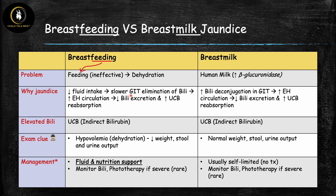With less fluid intake, there is less fluid in the GI tract, leading to slower elimination of bilirubin. Bilirubin then hangs around long enough to become deconjugated, enters enterohepatic circulation, and more unconjugated bilirubin gets reabsorbed — resulting in elevated indirect (unconjugated) bilirubin. On test questions, the key clue that this is breastfeeding jaundice and not breast milk jaundice is signs of hypovolemia and dehydration. These infants will show inadequate weight gain or weight loss, decreased stool output, and decreased urine output.